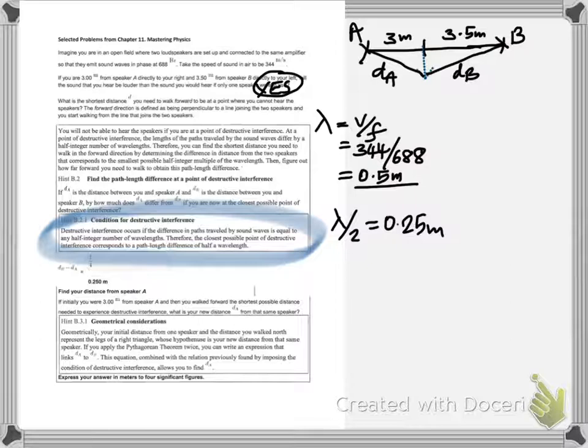In order to get destructive interference, you know that the path difference must be lambda by 2, because a crest must be superimposed on a trough.